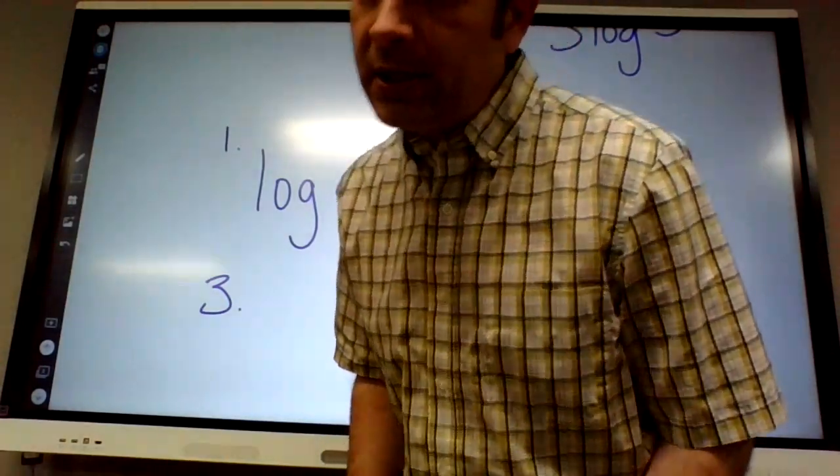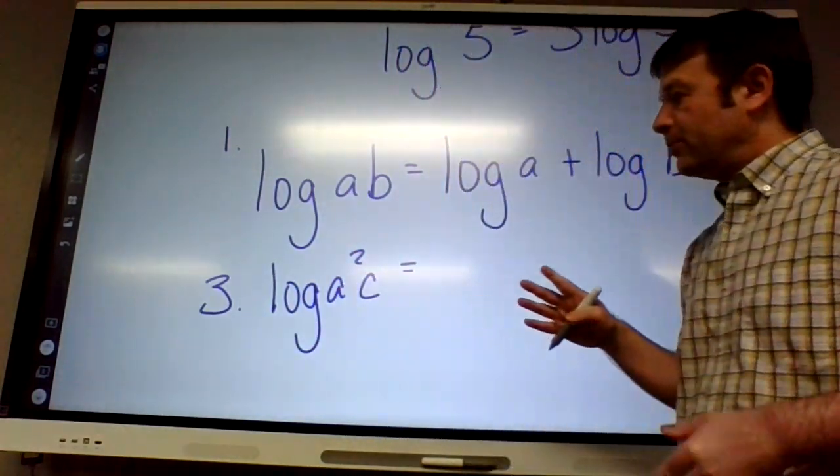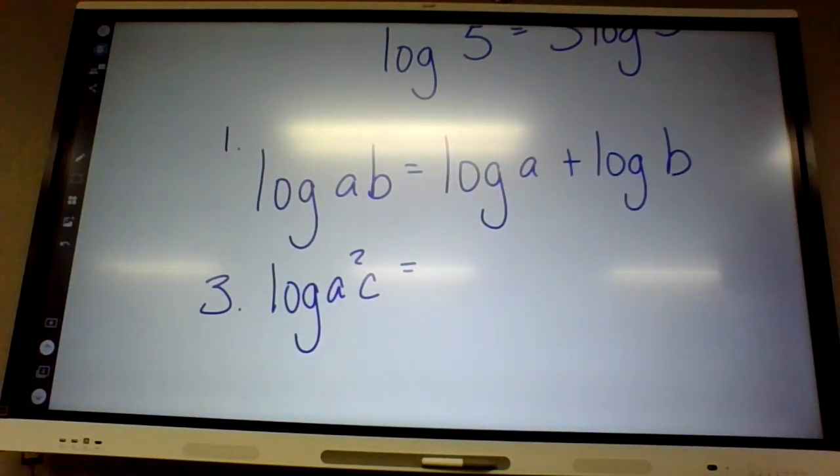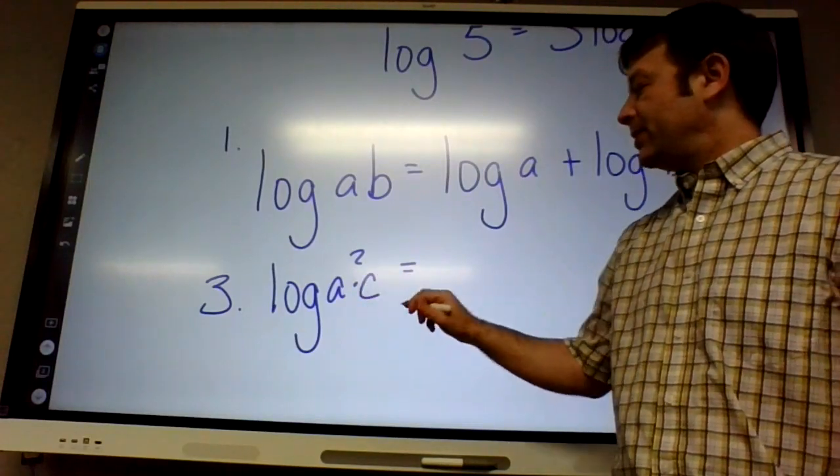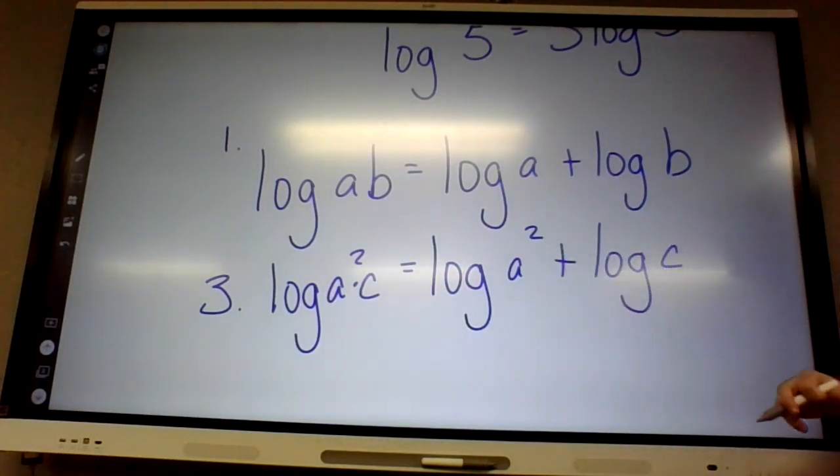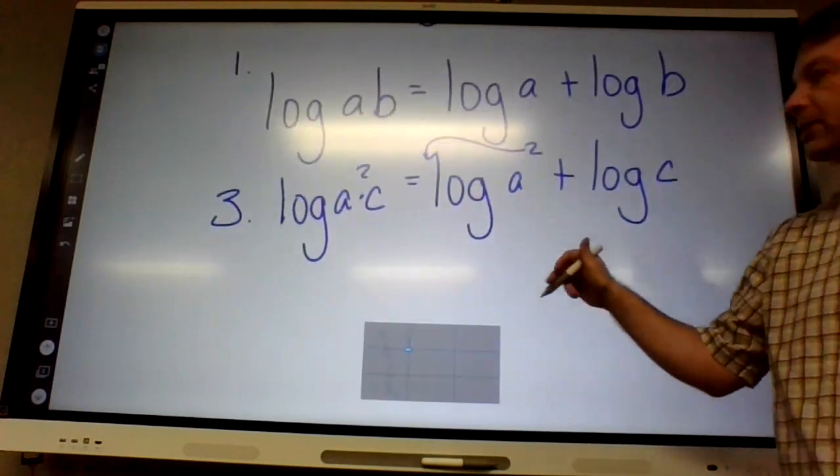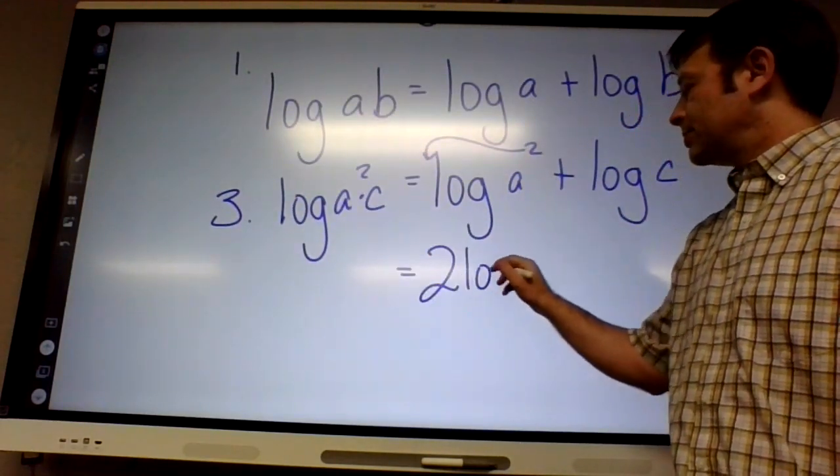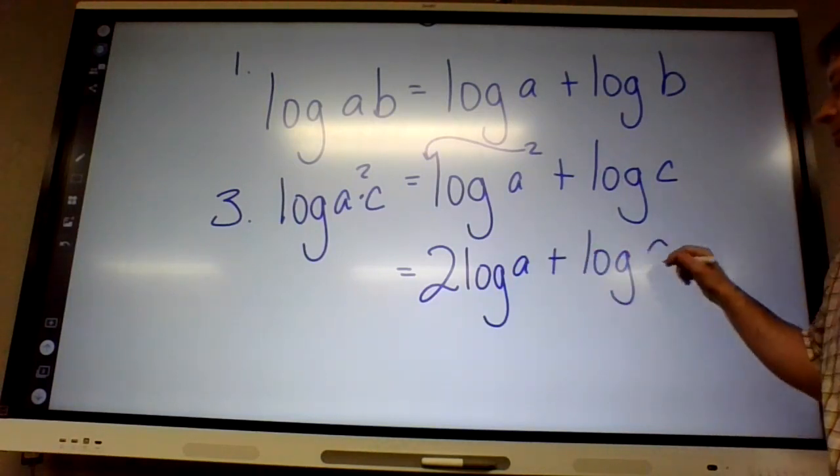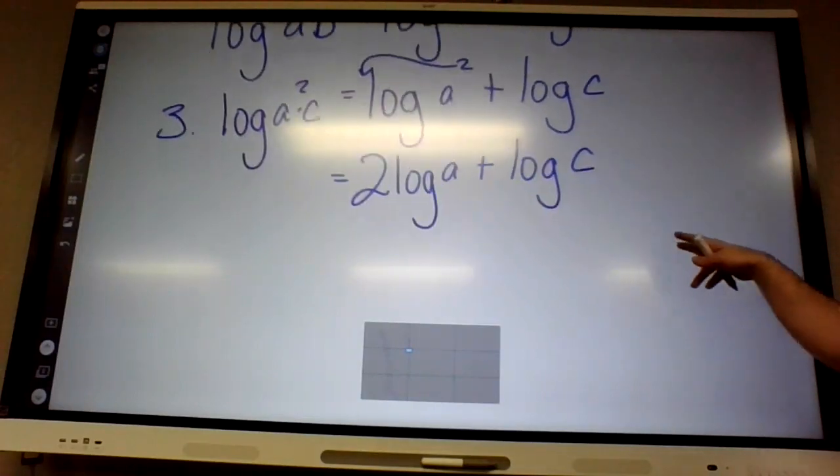Number three: log a squared c. We got two things to do: we're gonna break it up like we did on number one and then we're gonna move the exponent. So since these two are multiplied together, that's like log of a squared plus log of c. And then what did I say we could do with the exponent? Yeah, it can go up front. So that equals 2 times log of a plus log of c.